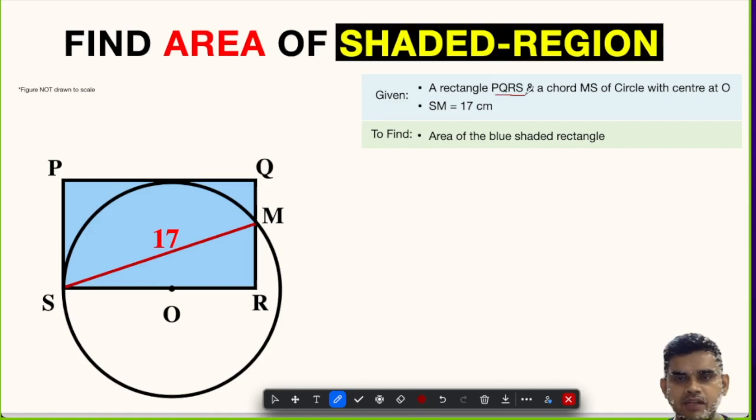We have a rectangle PQRS which is shaded in blue and we have a circle with center O and the chord MS whose length is given as 17 centimeters. We are asked to find the area of the blue shaded region.